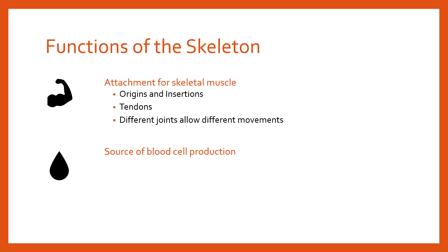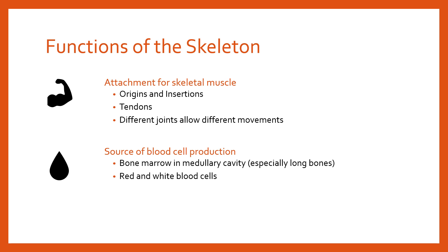Fourthly, the skeletal system is the source of blood cell production. In particular, in some of the long bones where there's a substantial amount of bone marrow, we get blood cell production. Red blood cells and white blood cells are produced inside long bones, in the cavities where the bone marrow is — the red bone marrow and yellow bone marrow inside the medullary cavity — that is where blood cell production happens.